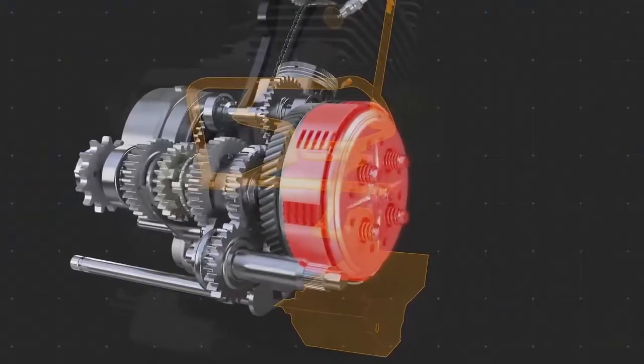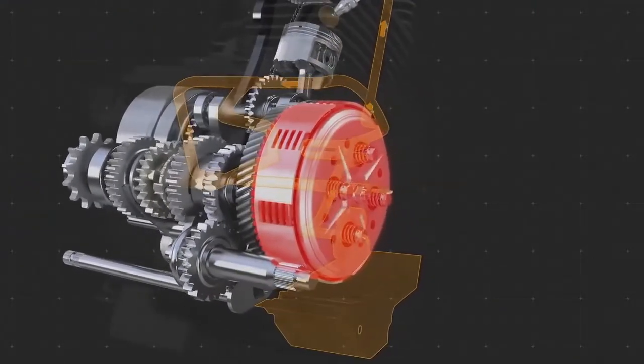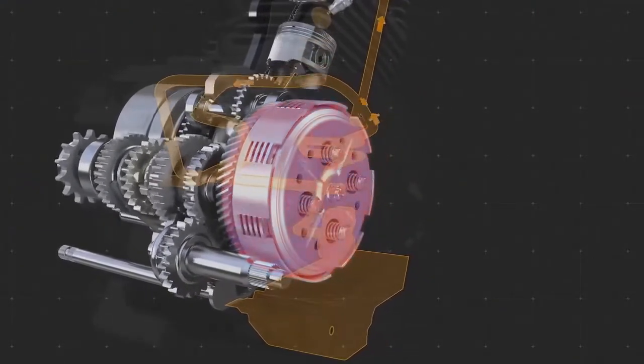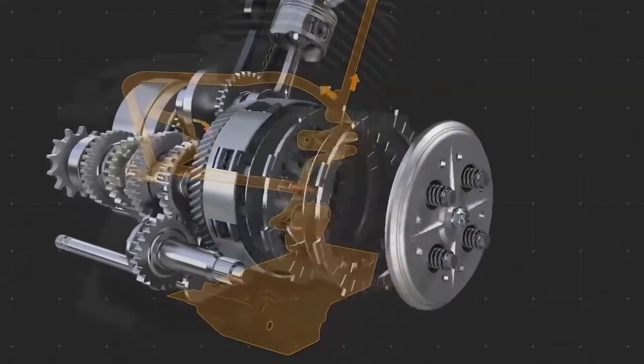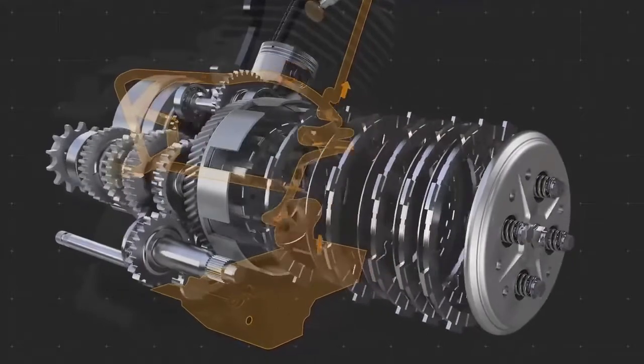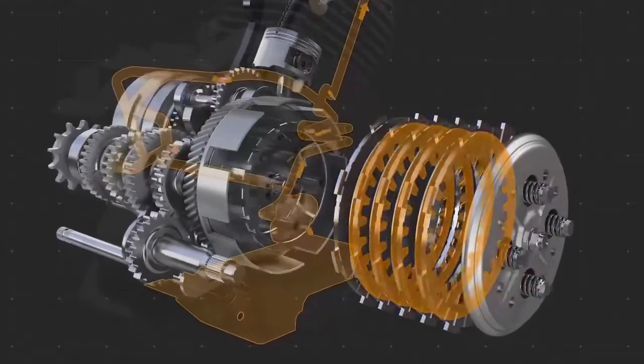In the clutch, the oil's versatility is tested even more. While cooling remains a key function to prevent overheating, the lubricant must also allow for the right amount of friction between the plates and discs for the mechanism to function properly when engaged.